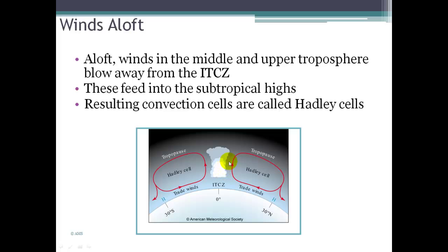When we continue the circulation pattern shown in red, there's convergence at the surface, uplift, and then the air spreads out — divergence aloft. These are the convective cells of the Hadley cell circulation. We have this transport of warm equatorial air that drifts poleward in the upper atmosphere in both the northern and southern hemispheres, and then it starts to sink or subside around 30 degrees north and south latitude, where the other circulation begins to kick in.